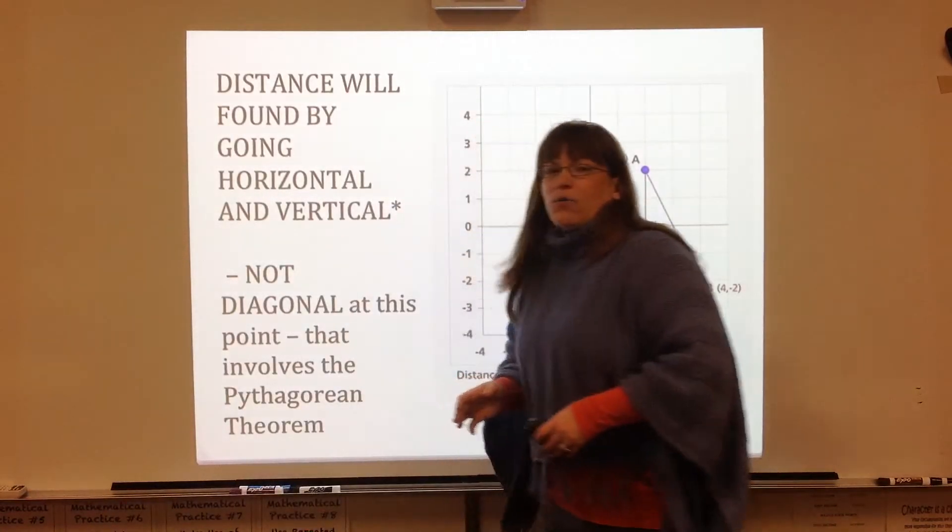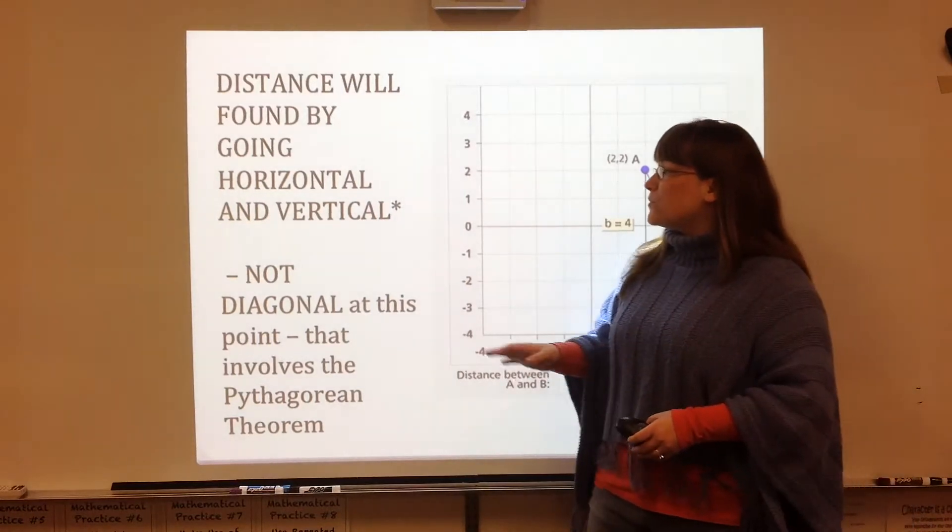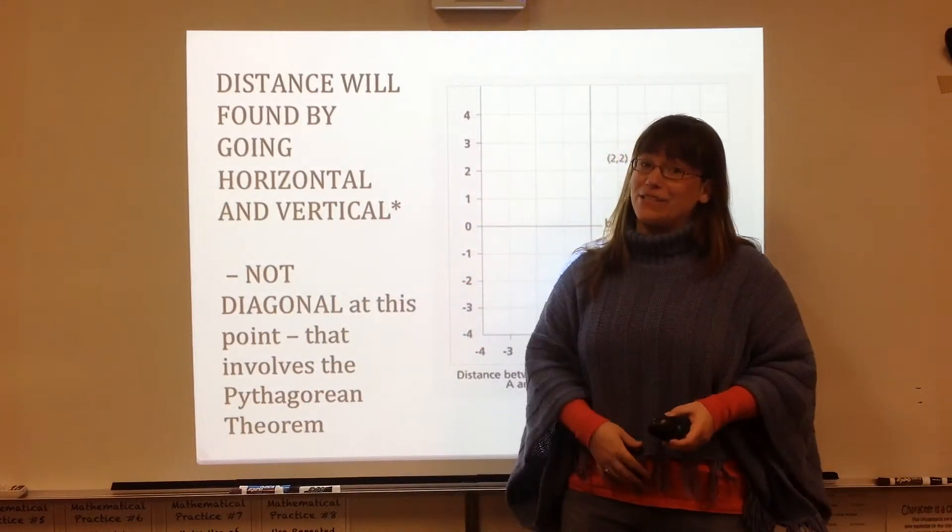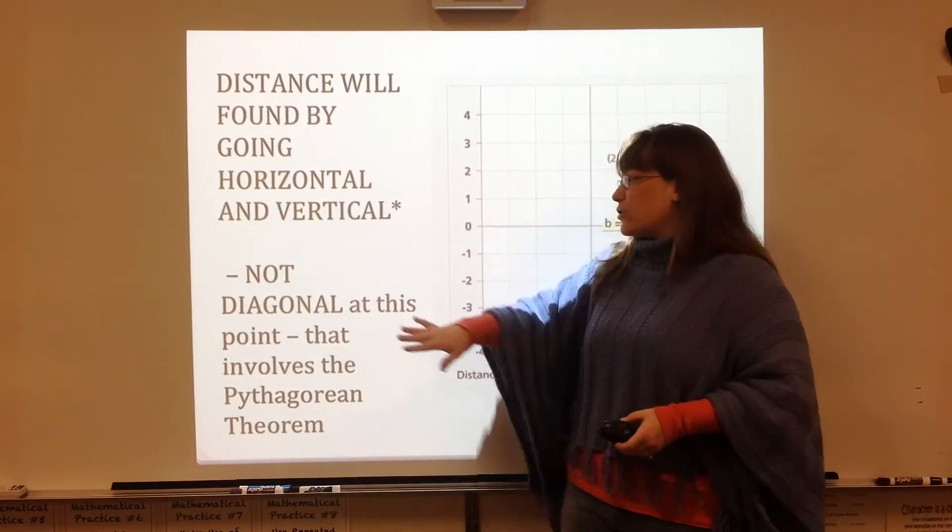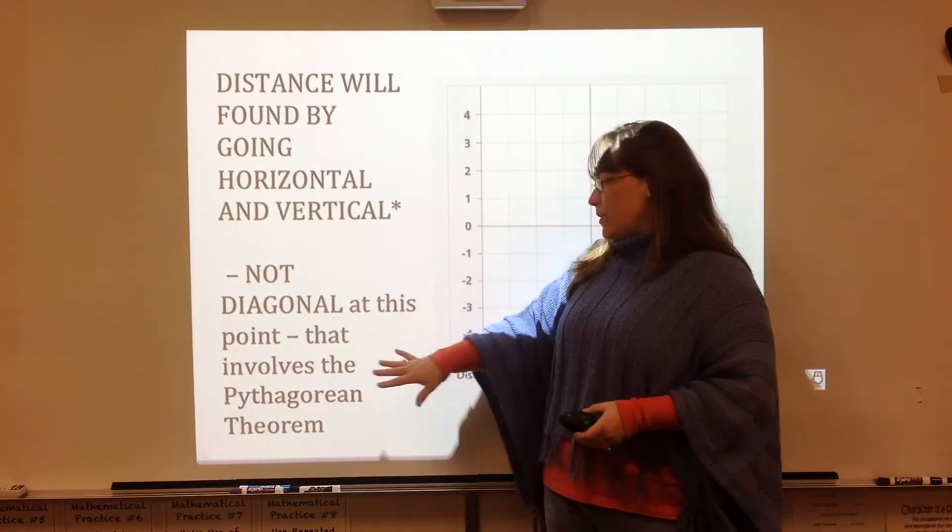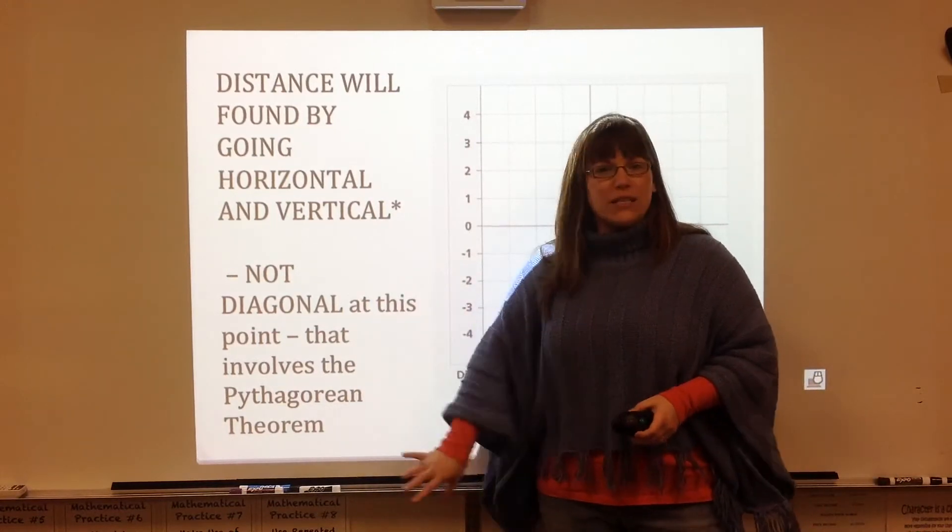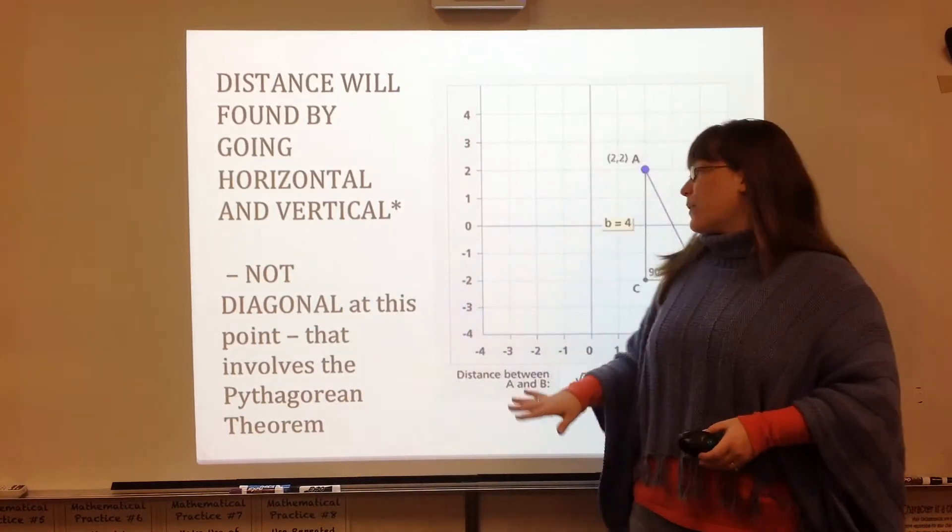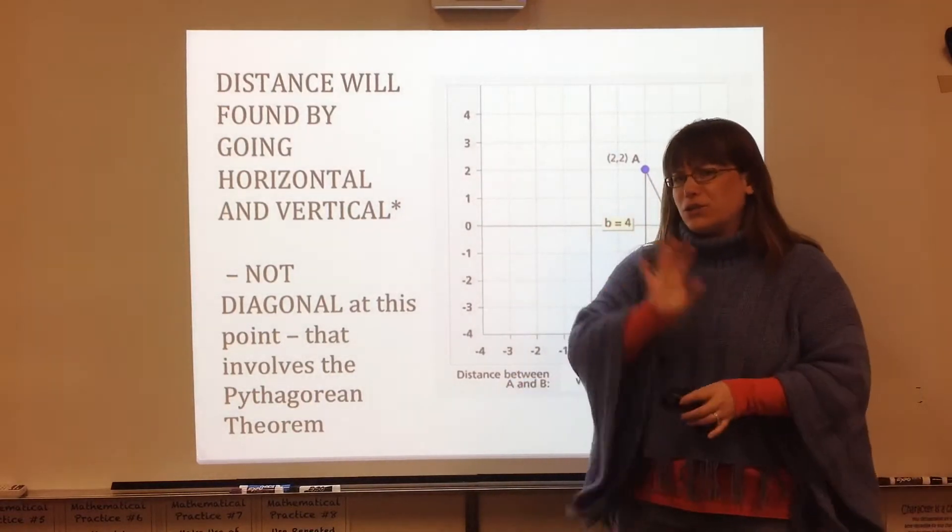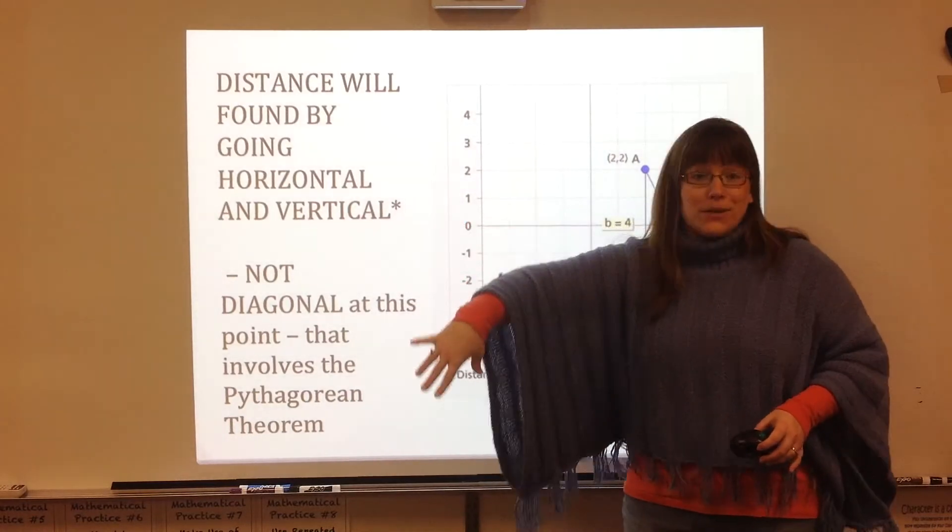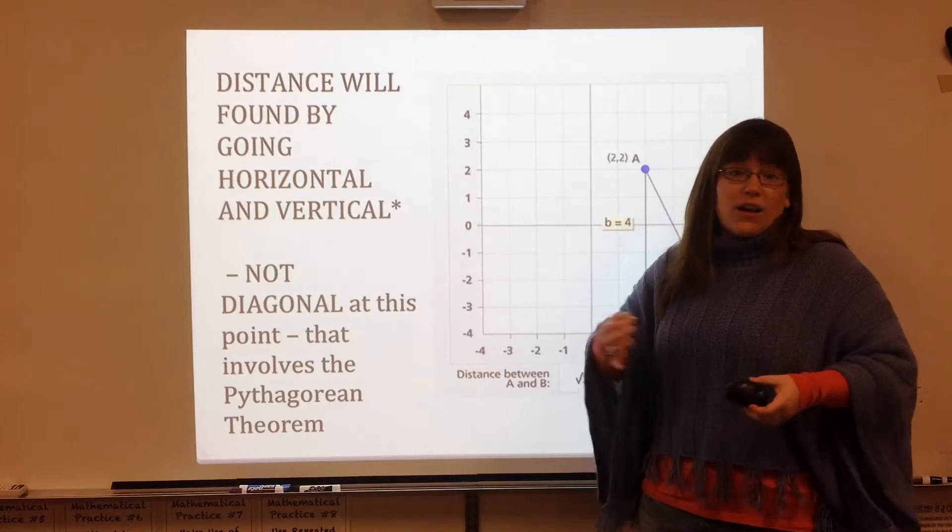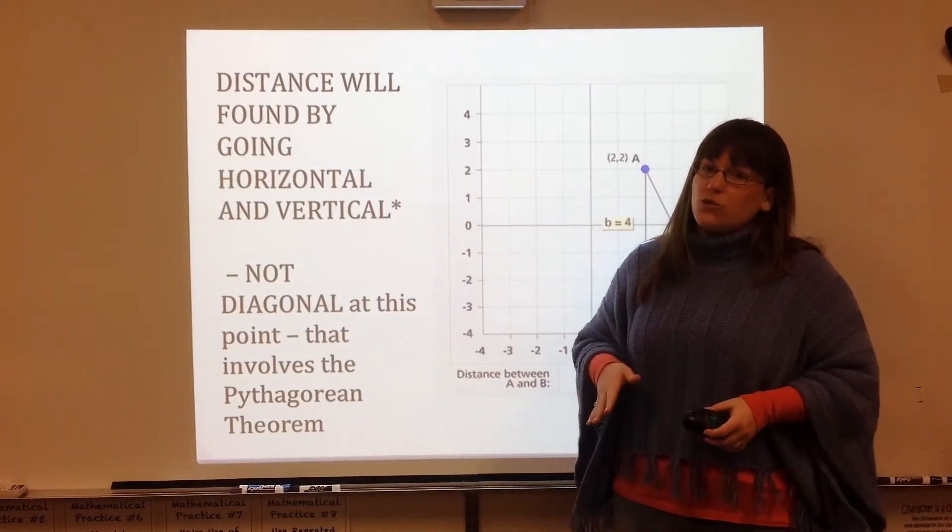So like I was talking about, we're going to be traveling horizontally and vertically today and finding distance only in those directions. We're not going to be diagonal. You can find distance of a diagonal, but at this point, we don't need to get into the Pythagorean theorem, which is a squared plus b squared equals c squared, which is something that you're going to be doing in middle school. So know that you can find distance of two points on a diagonal, but we're not going to be doing that today.